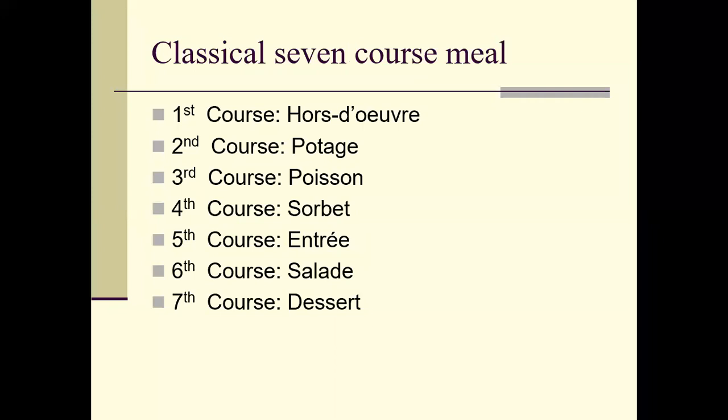Now we have the classical seven-course meal. The first course will be hors d'oeuvres, the second course is your potage — soup, the third course is your poisson — your fish course, the fourth course is your sorbet or intermezzo — palate cleanser, the fifth course is your entrée, the sixth course is your salad, and the seventh course is your dessert. For your entrée it could be a chicken dish or a duck dish — lighter protein portions.